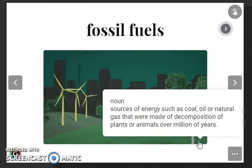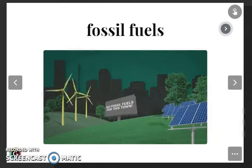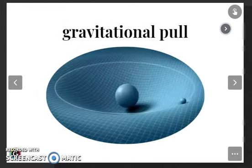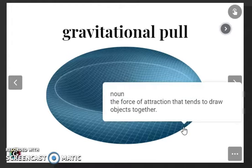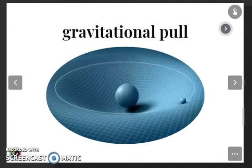Later we have gravitational pull. Listen and repeat: gravitational pull. And it's the force of attraction that tends to draw objects together, as you can see there on the picture, the big and the small ball.